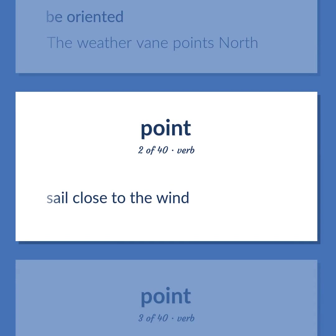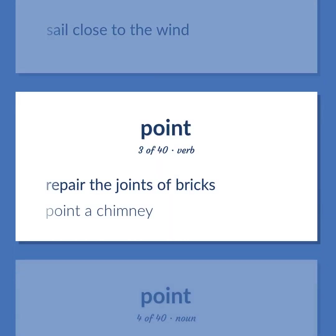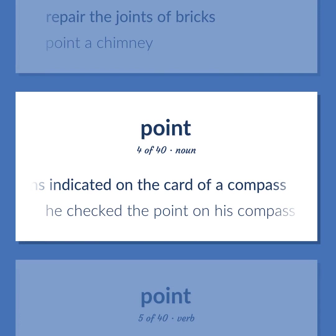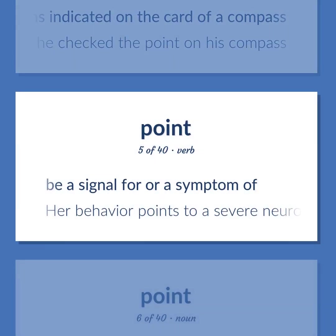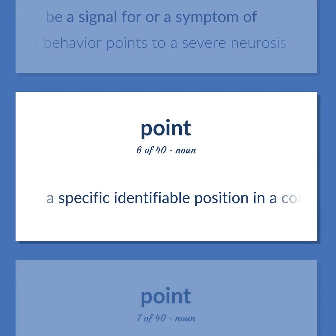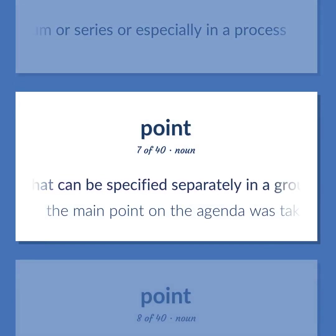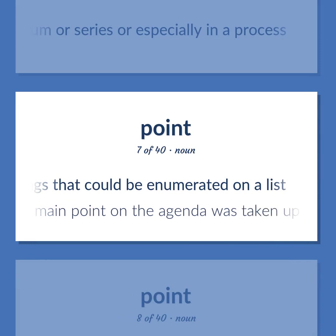POINT: Be oriented — the weather vane points north. Sail close to the wind. Repair the joints of bricks — point a chimney. Any of 32 horizontal directions indicated on the card of a compass. He checked the point on his compass. Be a signal for or a symptom of — her behavior points to a severe neurosis. A specific identifiable position in a continuum or series, especially in a process. A distinct part that can be specified separately in a group of things that could be enumerated on a list — the main point on the agenda was taken up first.